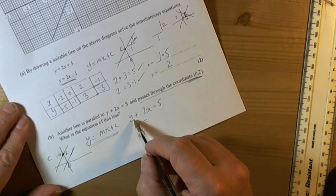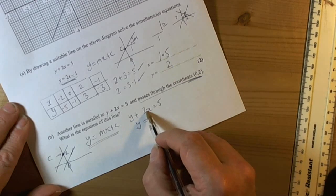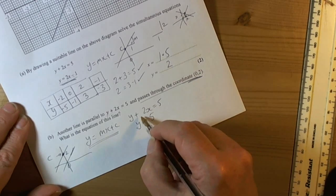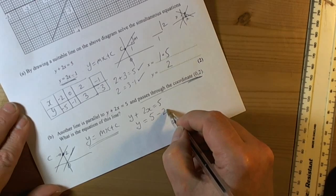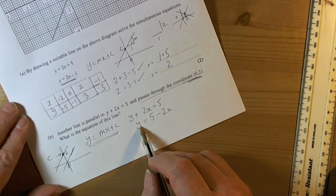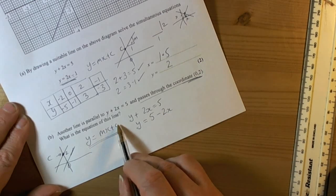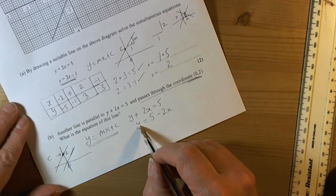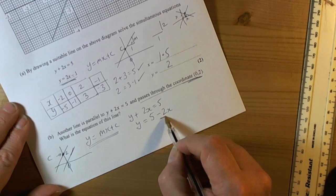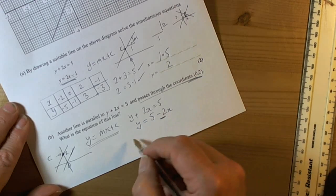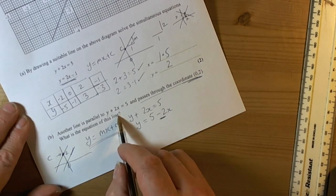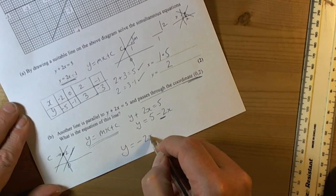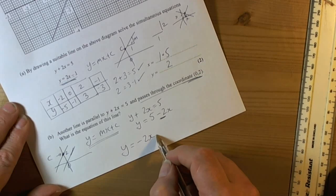We want y as the subject, so we need to move plus 2x to the other side. Well, the opposite of plus 2x is take away 2x. So this is now in the format of y equals mx plus c. We can see here that our gradient is minus 2. So the equation of this line is going to be y equals minus 2x. It's got the same gradient, so it's parallel.